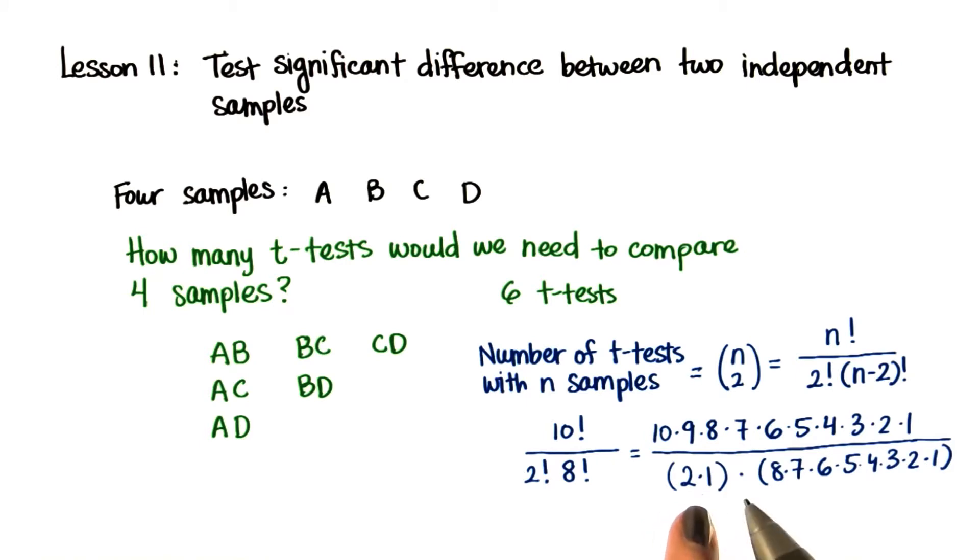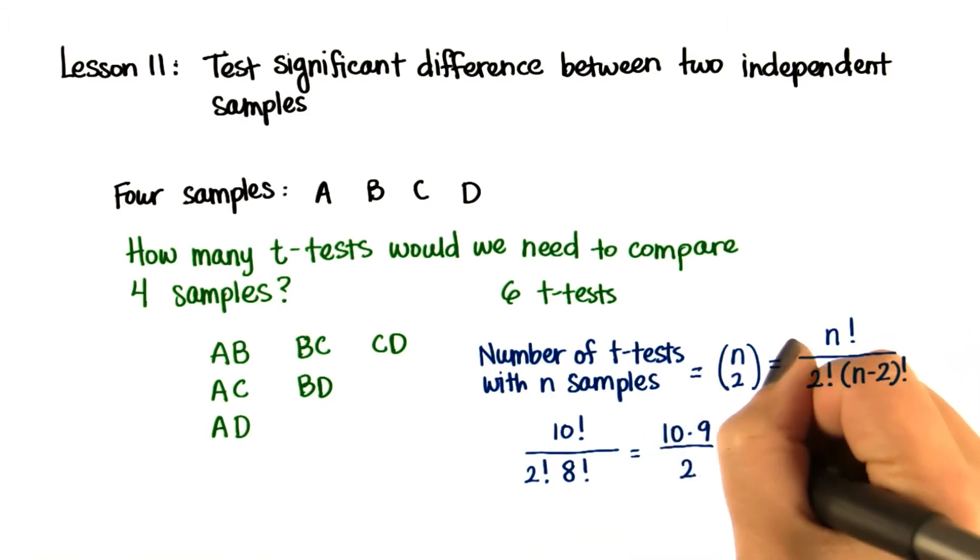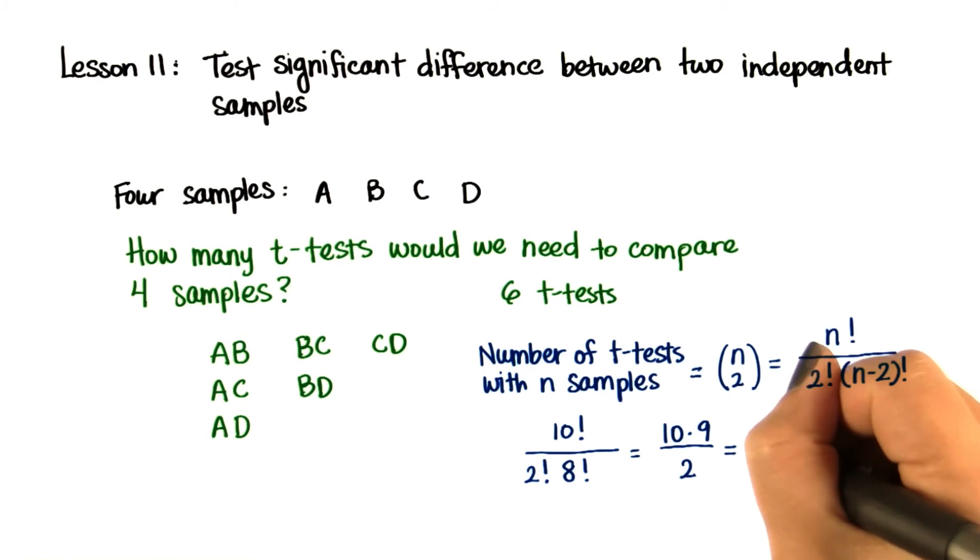Divided by 2 times 1, for 2 factorial, times 8 factorial. These parts cancel out, and we're left with 10 times 9 divided by 2, which is 45. We would have to do 45 t-tests just to compare 10 samples.